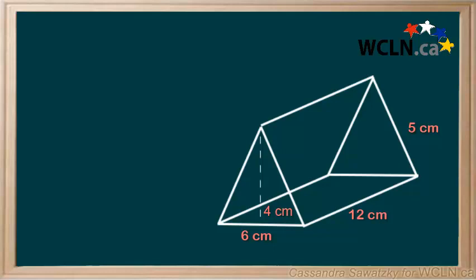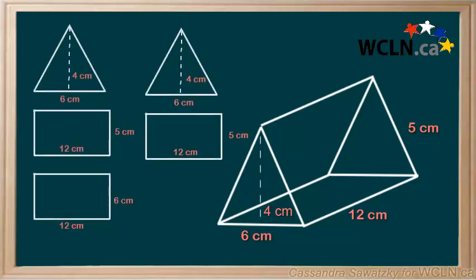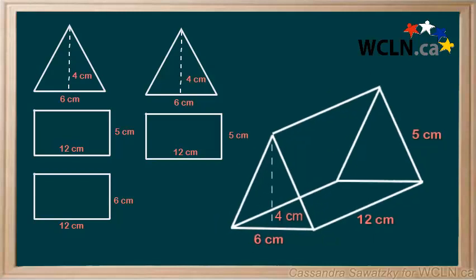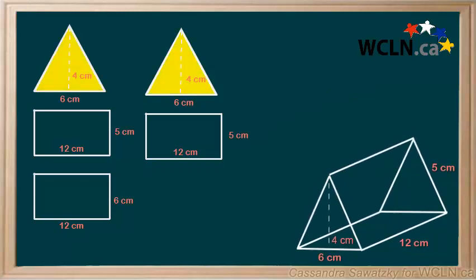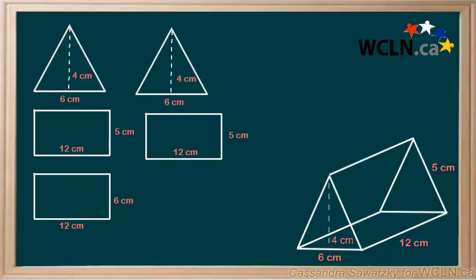To organize our work and to make it easier to know which sides we've already done, we can make a list of all of the faces. Here you can see the faces of this prism and notice both of the triangles are the exact same. So we calculate the surface area of one triangle and then multiply it by two.